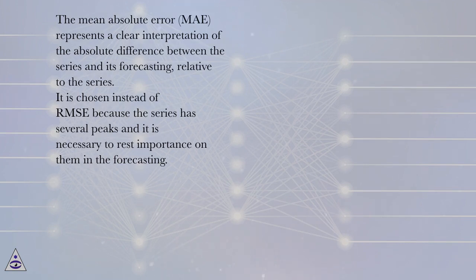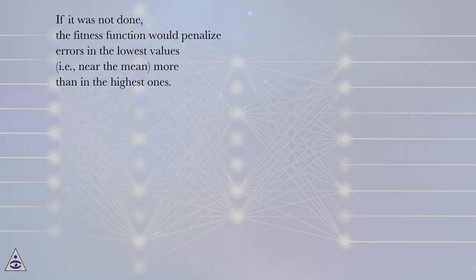It is chosen instead of RMSE because the series has several peaks and it is necessary to reduce importance on them in the forecasting. If it was not done, the fitness function would penalize errors in the lowest values, i.e., near the mean, more than in the highest ones.